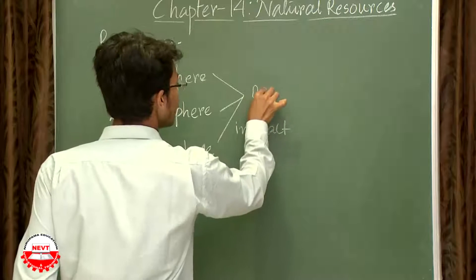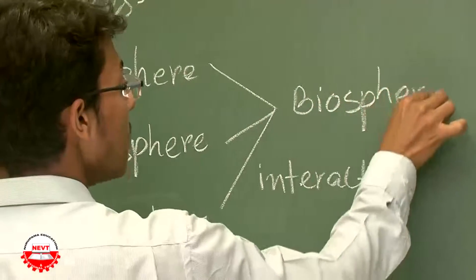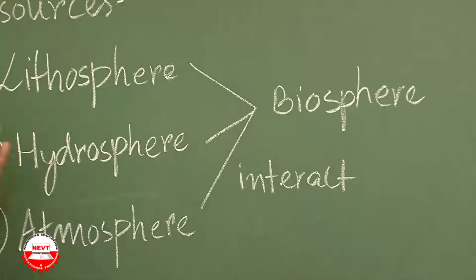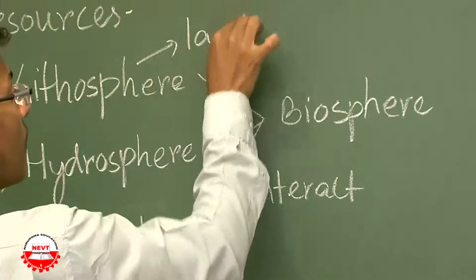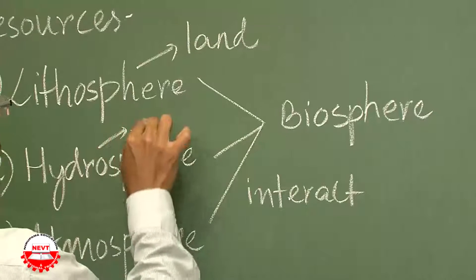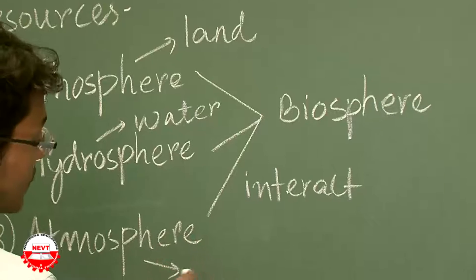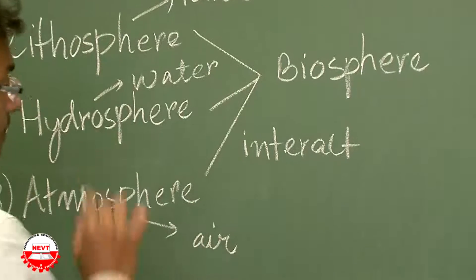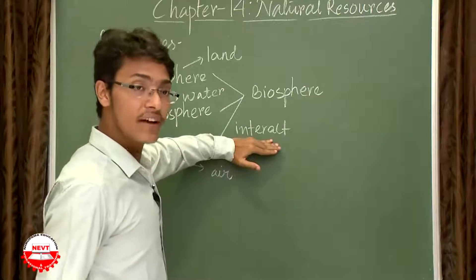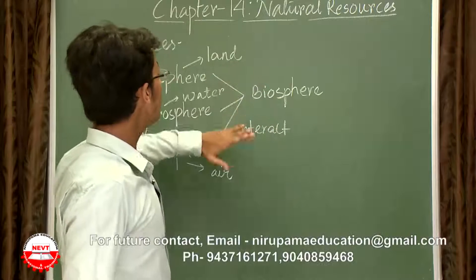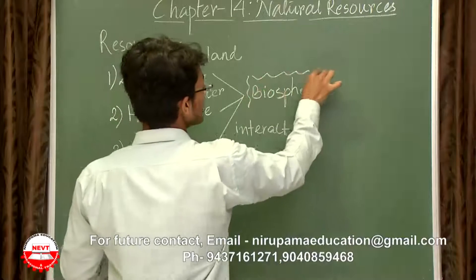Lithosphere refers to land, hydrosphere refers to water, and atmosphere refers to air. So when there is a conjugate interaction between land, water, and air, there forms the biosphere that is responsible for us to be living. Am I clear?